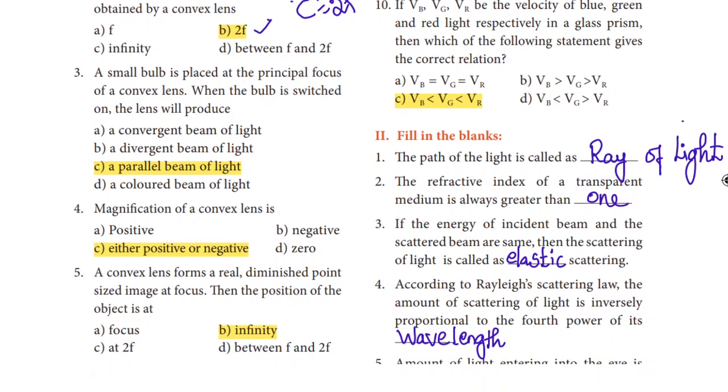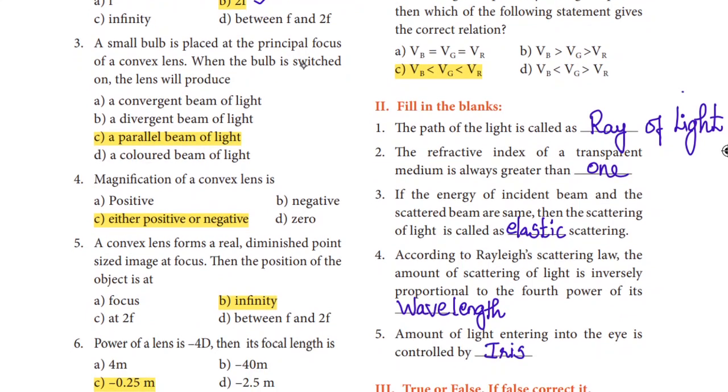Next question: A small bulb is placed at the principal focus of a convex lens. When the bulb is switched on, the lens will produce a parallel beam of light. Option C is the right answer.